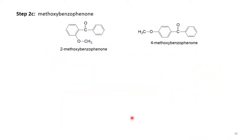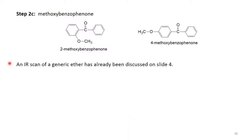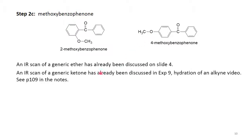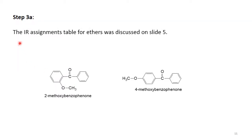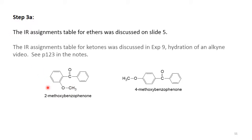Let's look next at the products — the aromatic ethers. An IR scan of a generic ether was discussed on slide 4, so that aspect won't be repeated here. Likewise, an IR scan of a generic ketone was already discussed in experiment 9 on the hydration of an alkyne, on page 109 of the notes. The IR assignment table for ethers was discussed on slide 5, and the IR assignment table for ketones was covered in experiment 9.